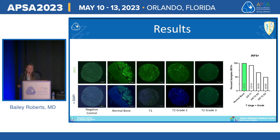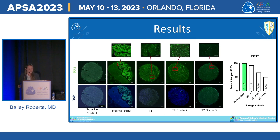We stained human tumor samples for IRF-5, shown as green fluorescence, and quantified samples with positive staining. Significantly more normal bone samples had positive IRF-5 signal, which progressively decreased with increasing T-stage and grade, representing a loss of IRF-5 with increasing disease severity. There was also a visible trend of decreased green fluorescence with increasing tumor T-stage and grade in the tissue images.